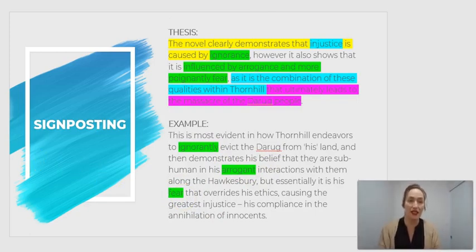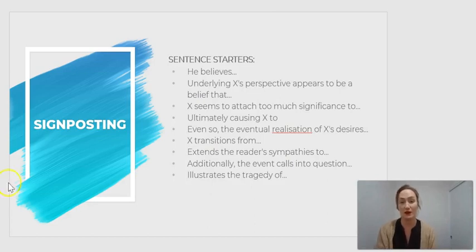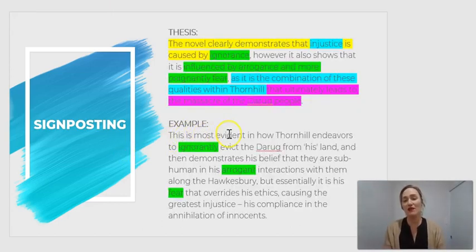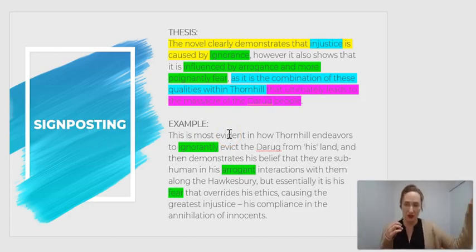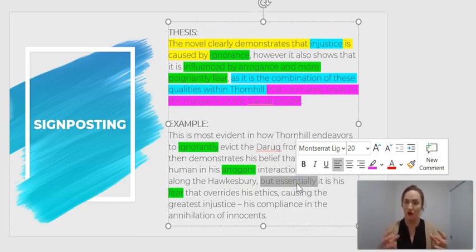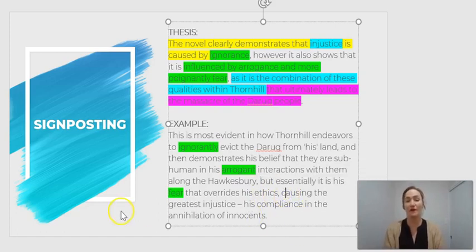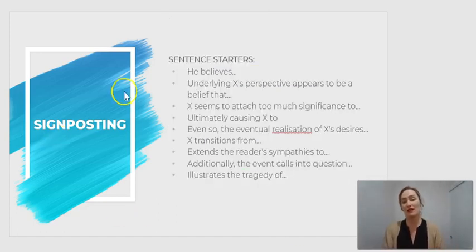Okay, so then if we go here, one thing that I can encourage you with signposting is that I really recommend using some sentence starters. Because you want to use a lot of cohesive devices. I don't know if you noticed, but in this example I have 'this is most evident'—that's a cohesive device. I'm linking the previous sentence to the next idea. And then 'demonstrates his belief,' 'but essentially,' and here we have another cohesive device joining it together, saying yeah, they're two really important points, but this is the most important point, and this is what it causes.